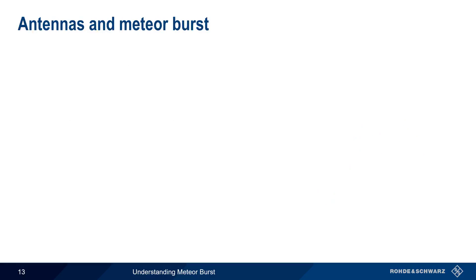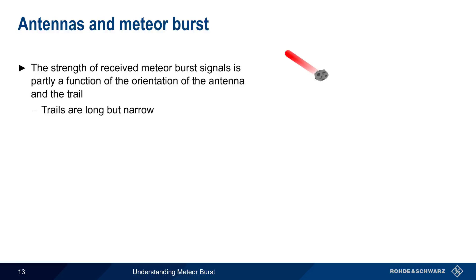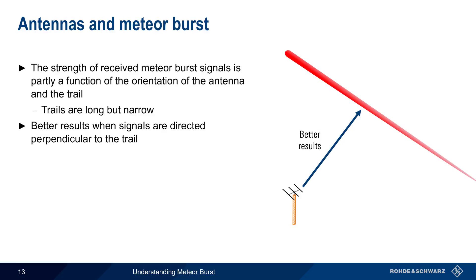The orientation and direction of antennas can also be important for meteor burst communications, since this can have a significant impact on received signal levels. Recall that the ionized trails left by meteors are long but rather narrow. This means that the best results are obtained when signals are directed perpendicularly or broadside to the trails, as shown here, rather than at shallower angles.